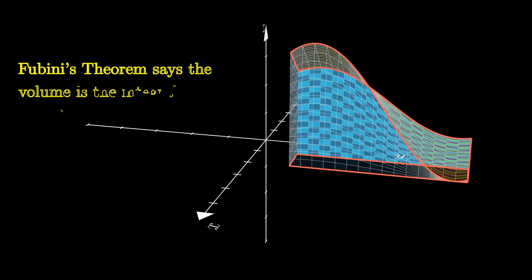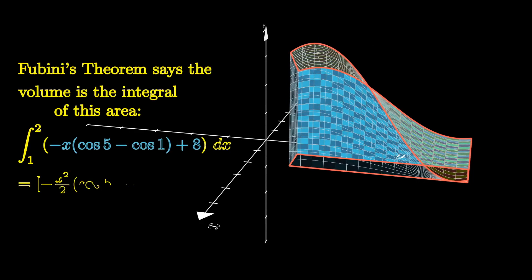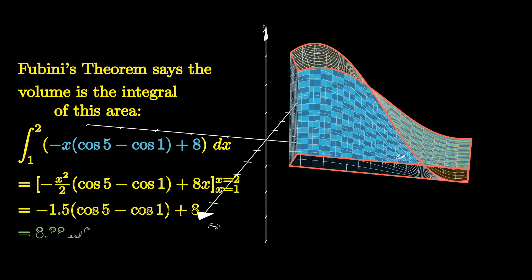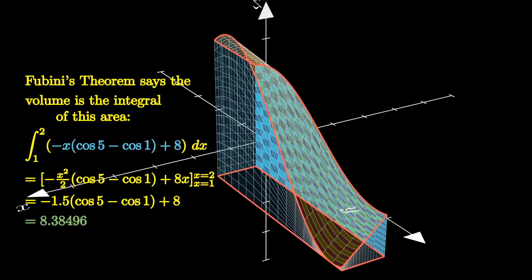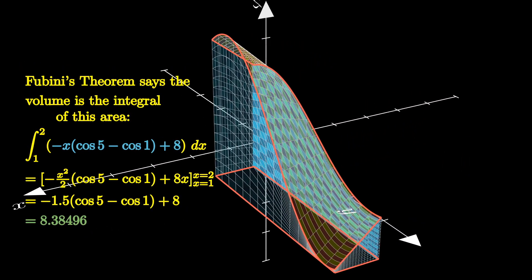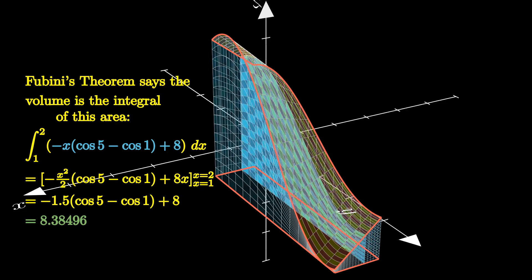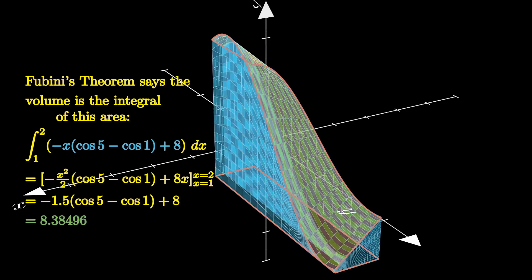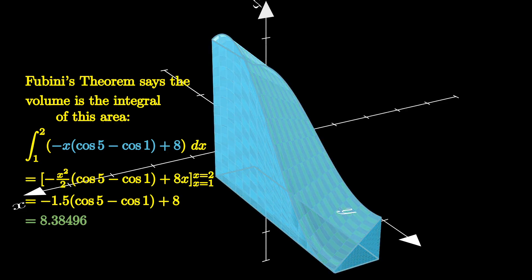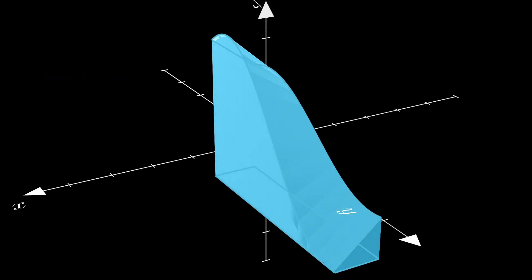Fubini's theorem says the volume is the integral of the area expression with respect to X. Thus, the volume of the solid is about 8.38496. And here's how you can visualize why integrating this cross-sectional area yields the volume of the solid.